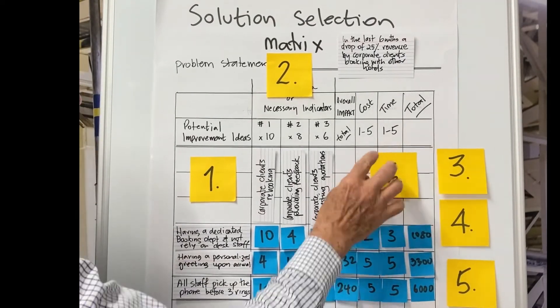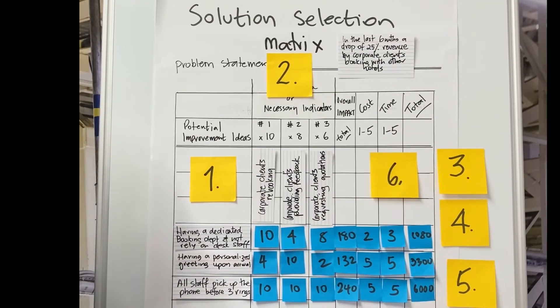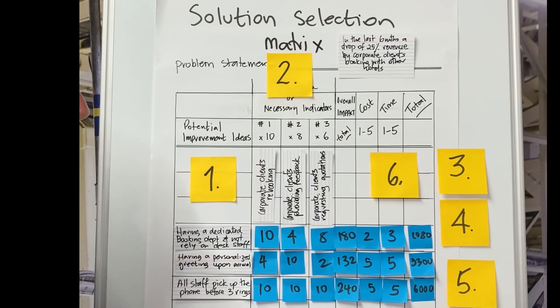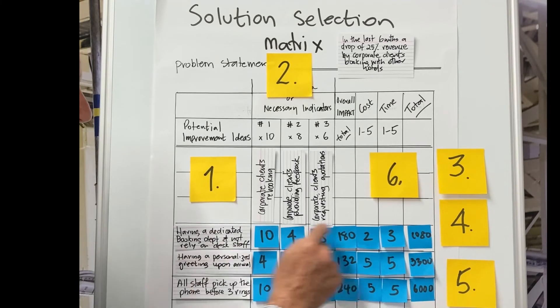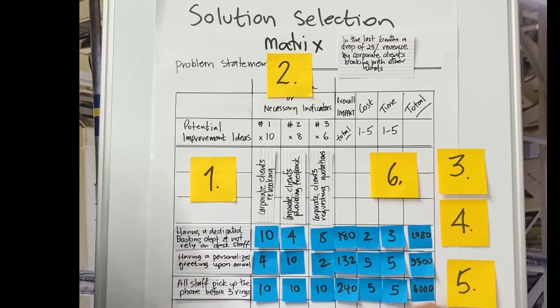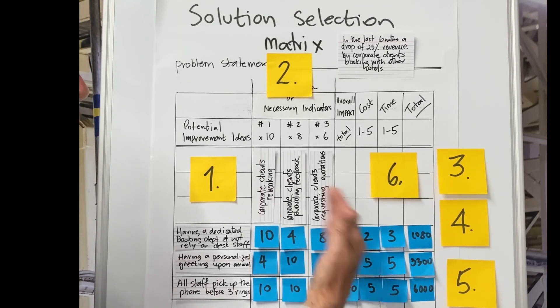And then step number six is where we start to rank the improvement ideas according to their final score. So for example, this particular idea scored the highest, so it's the highest priority to implement. This particular idea scored the lowest out of the three. So that's the least important in priority. So these are the objective numbers that help us prioritize using the solution selection matrix.